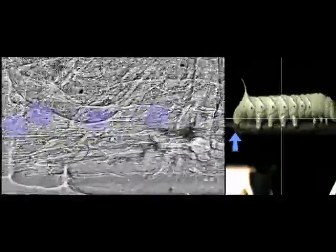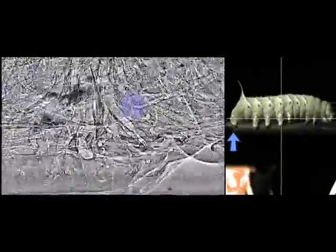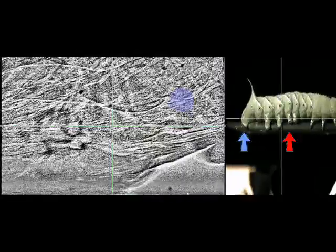Quantitative analysis confirmed that these gut-associated trachea move in synchrony with the terminal prolegs and not the local body wall, indicated on the visible light video with a red arrow.